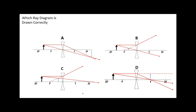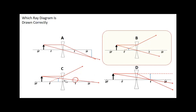Which diagram is drawn correctly? On a multiple choice test, you'd have a question like this. Based on your knowledge, the answer should be B. What's the difference between C and B? It's where the second ray goes through — C is just slightly off. It would still form an image that gives you your answer, but B is the correctly drawn one.